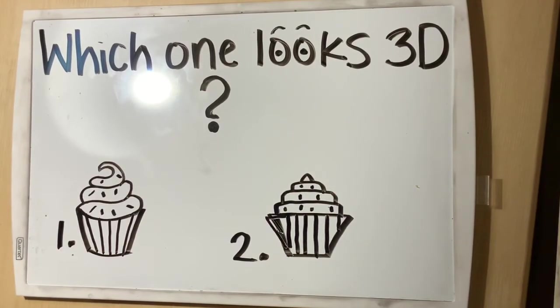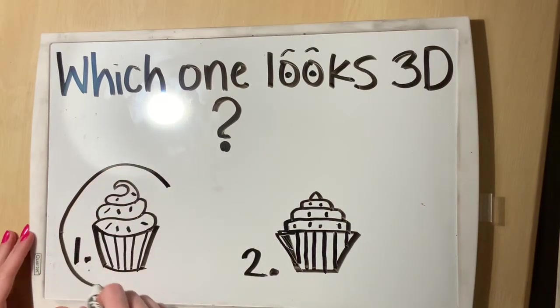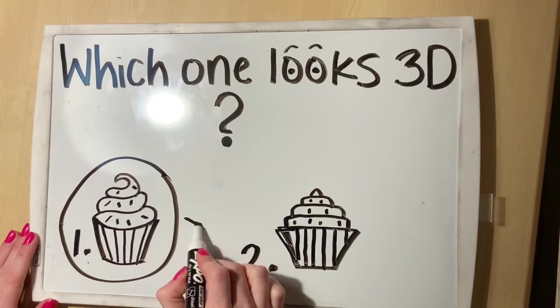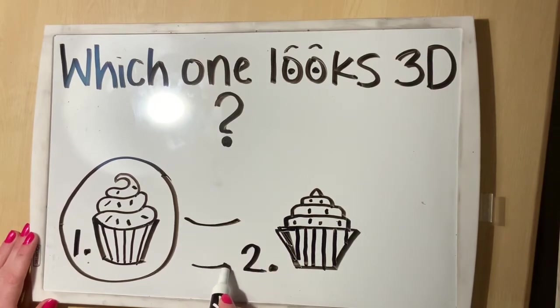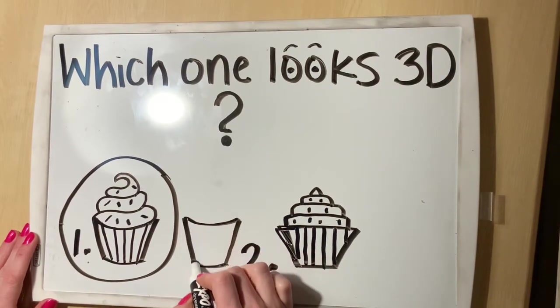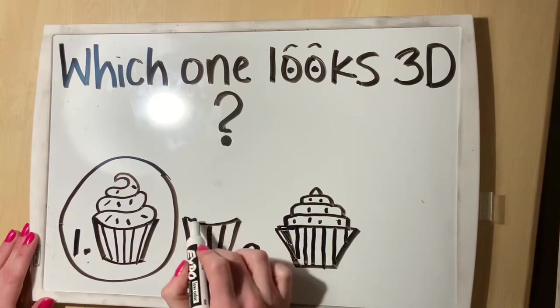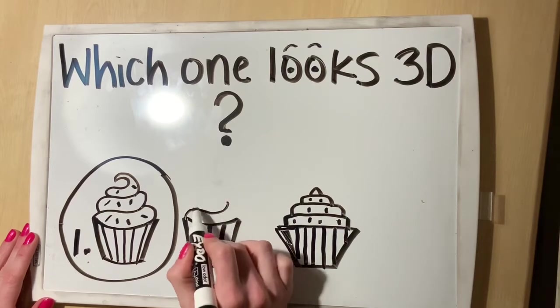But first I have a question for you. Does number one or number two look more 3D? In my opinion, number one looks more 3D because of the curved lines and the lines inside the cupcake holder, as well as the curved lines in the frosting. Those lines trick your eye into thinking that cupcake is 3D.